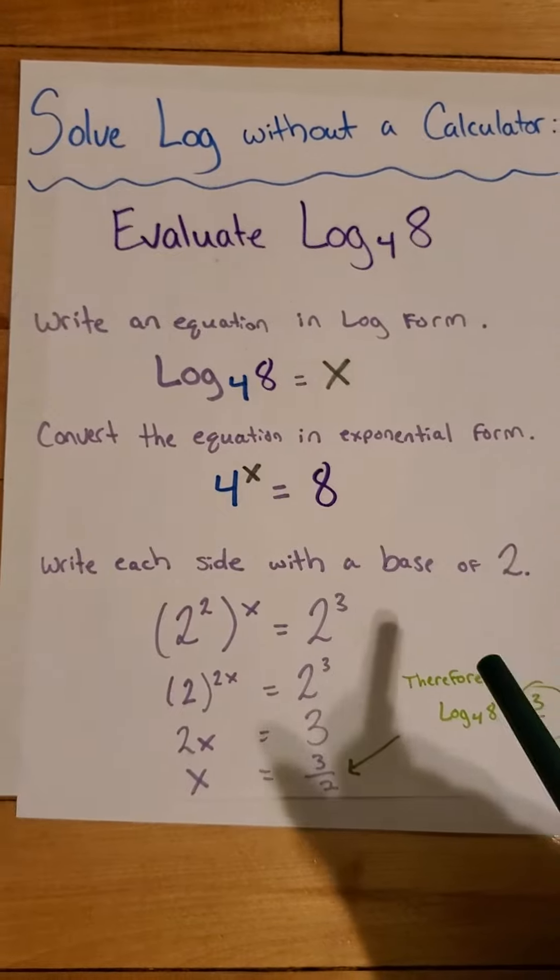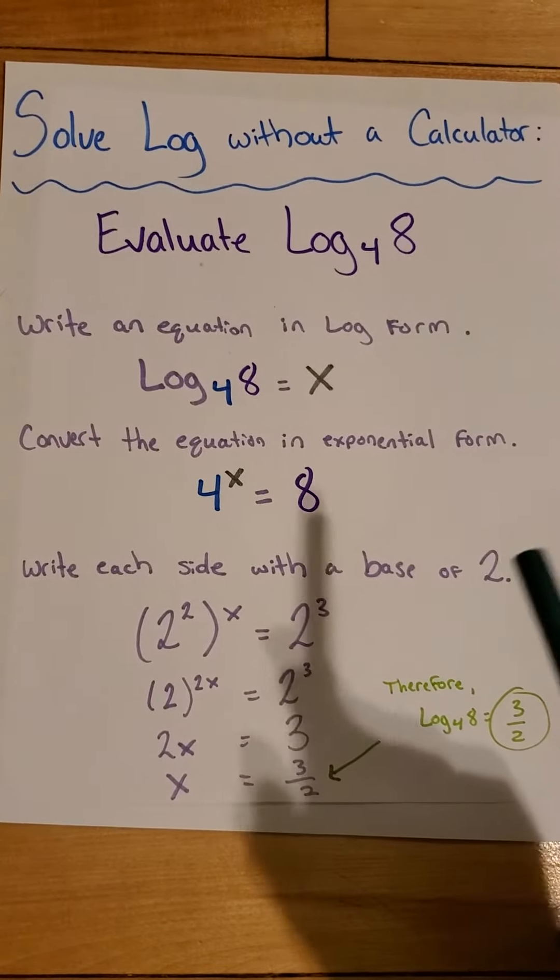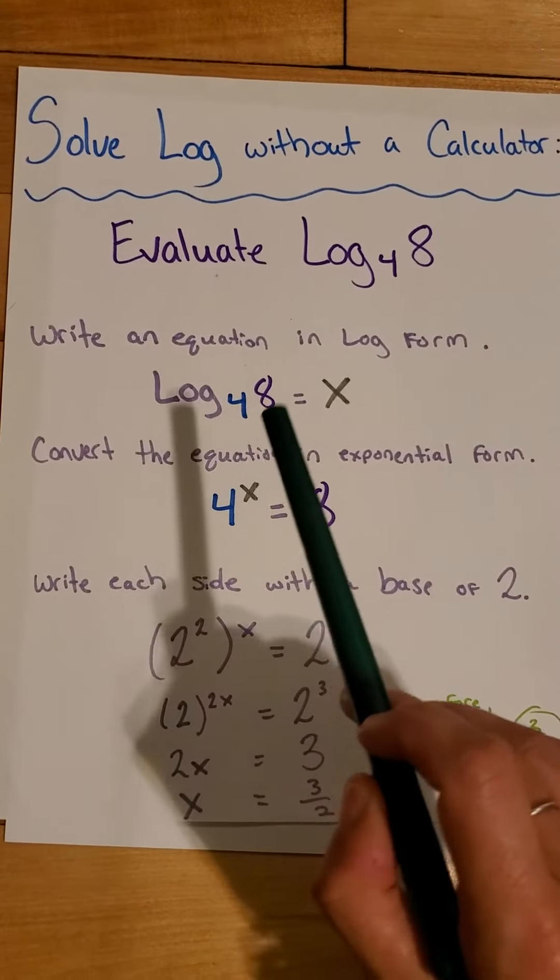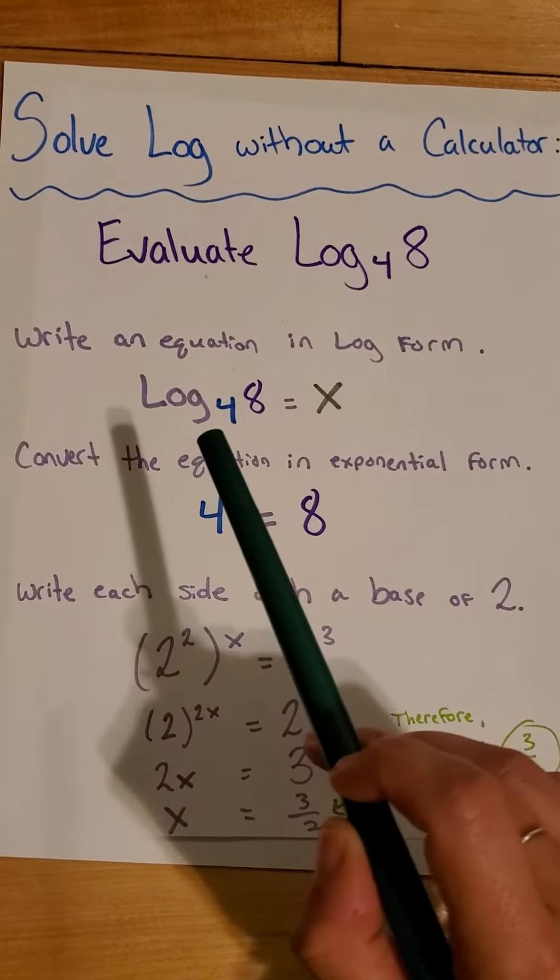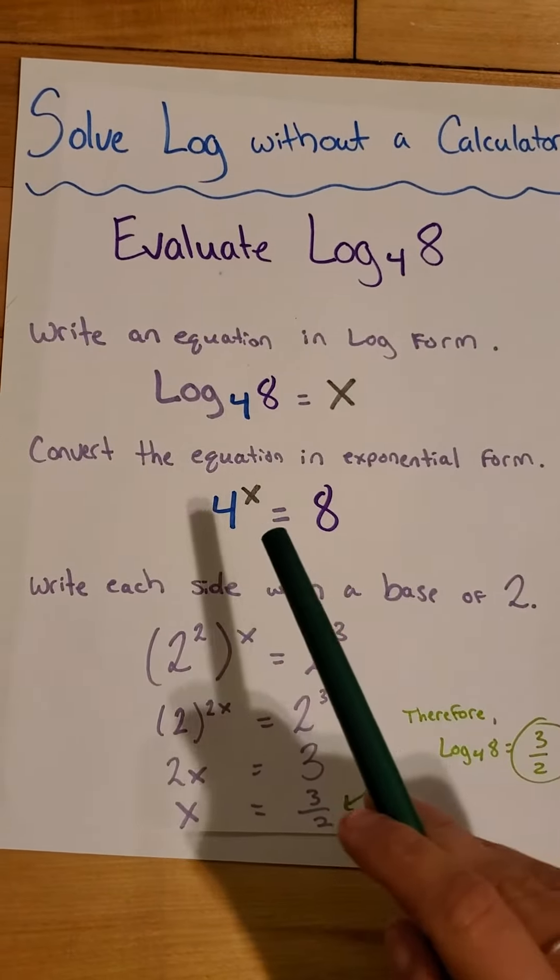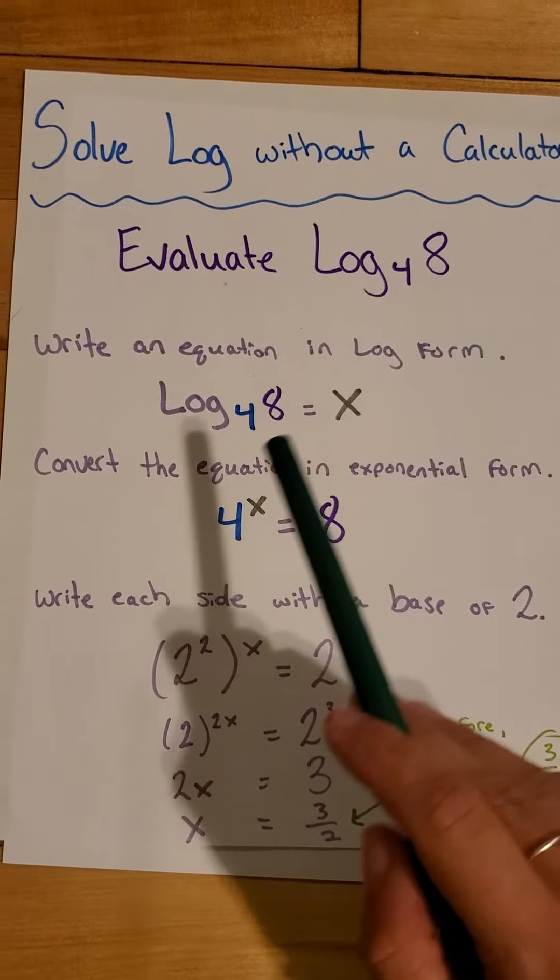And if you saw the previous little mini lesson I did with log properties, I kind of went over some different rules and equations and how things were written out. So this is kind of in there too. So again, log of 4, 8 equals x.